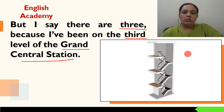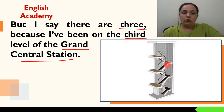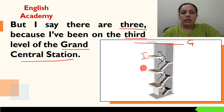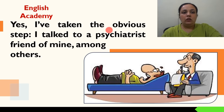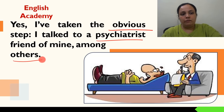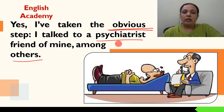Yes, I have taken the obvious step — obvious means something which is natural. I talked to a psychiatrist friend of mine, among others. Psychiatrist kya hai? Ek aisa doctor jo humare brain ki working aur humaari psychological problems ko deal karta hai. Ab writer ko jab aisa laga ki unhone third level bhi dekha hai, jo ki actually exist nahi karta, toh unhone apne psychiatrist friend se iske baare mein discuss kiya.